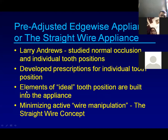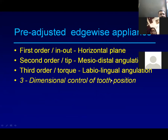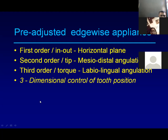The pre-adjusted edgewise appliance reduces working time and is more hassle-free because tip, torque, and in-out are all built into the bracket. However, if a patient misses appointments or a tooth debonds and shifts, you may need to compensate using wire bends, since you cannot always rebond the bracket once moved to a heavier wire without losing the mesh.